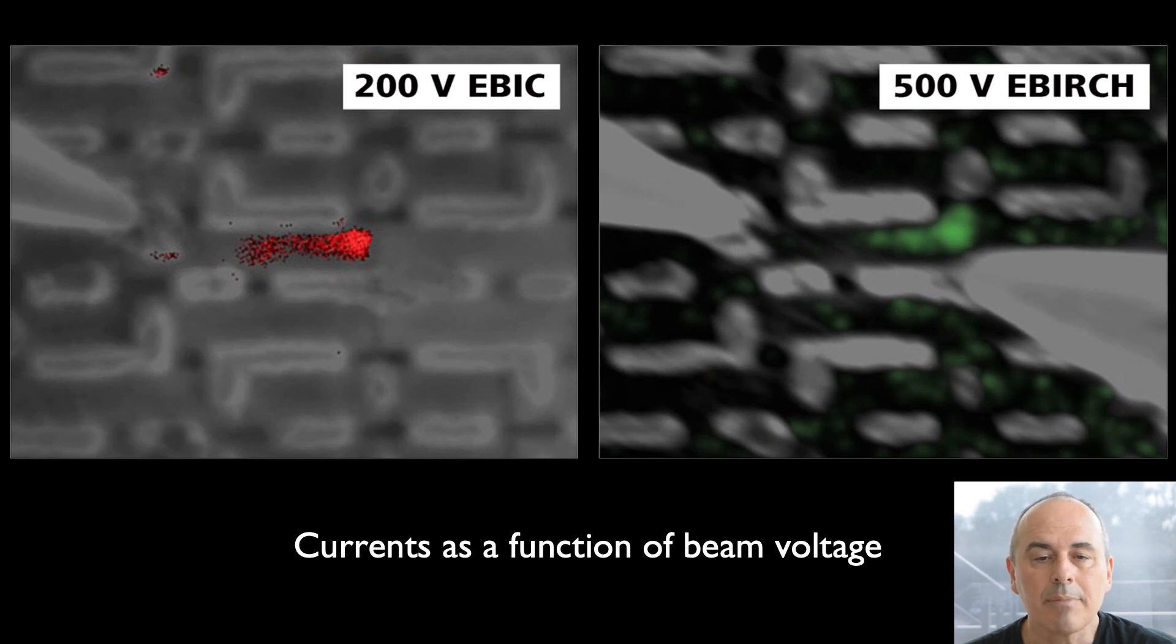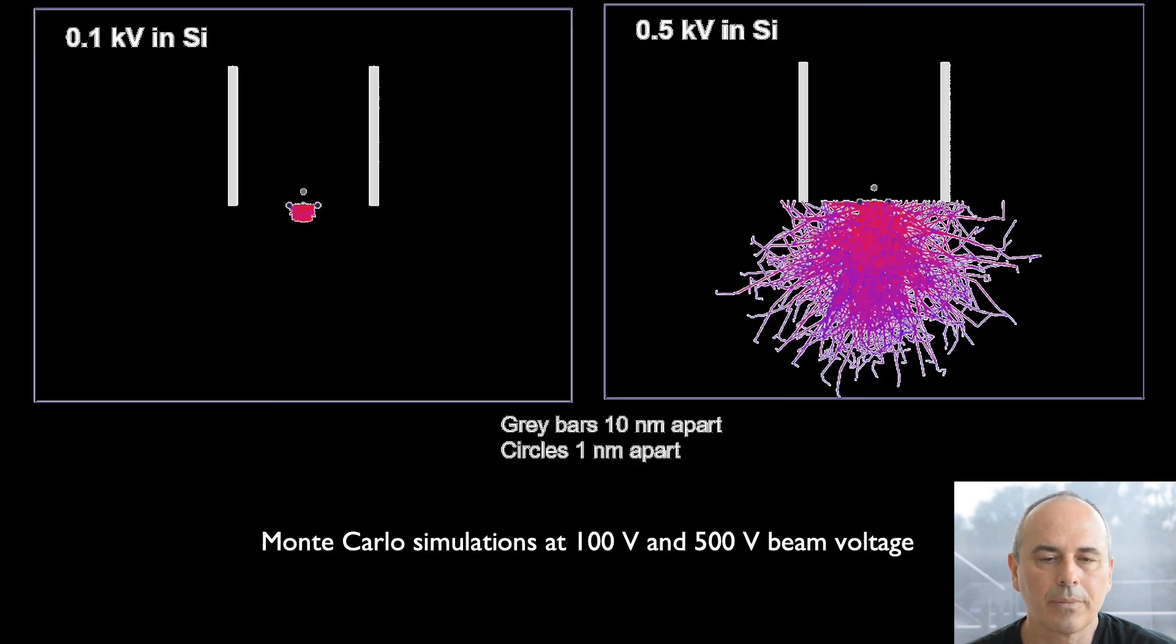A look at the EBIC images taken before and after overstressing the transistor shows that we have a maximum current change at beam voltages between 150 V and 200 V. On the other hand, the best EBIRCH image was taken at an acceleration voltage of 500 V. Comparing these two images we see a strong correlation of the maximum measured currents. While we have two smaller maxima in the EBIRCH image, there are no corresponding smaller maxima visible in the EBIC image.